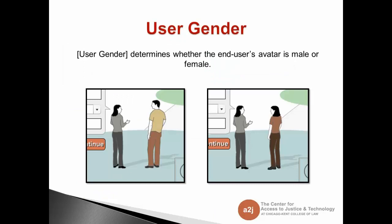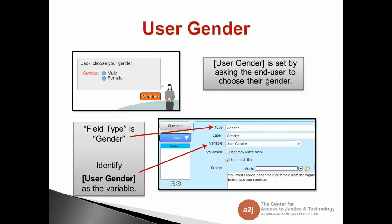The second one is user gender. User gender determines whether the end user's avatar is male or female — you have two options. If the user selects male, you get a male avatar; if they select female, the avatar representation shows as female. This is one of those pre-formulated questions that shows up in A to J Author when you start a new interview — there are about three or four preset questions, and gender is one of them.